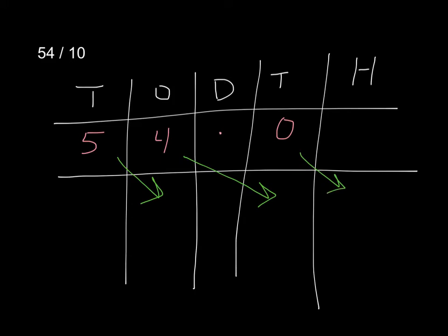And I rewrite it as 5 and, don't forget the decimal, 4 tenths and 0 hundredths. So I have 54 divided by 10 is 5 and 4 tenths.